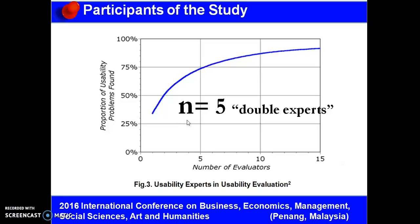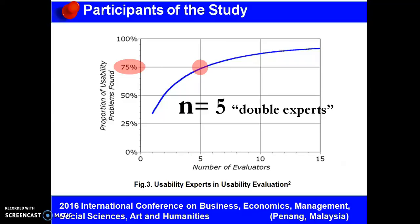The five participants of this study are called double experts. Double experts are those individuals who have multiple areas of expertise. They can effectively determine more usability problems since they are expert users who have a strong knowledge base about usability, competence on the use of computers or systems, and strong familiarity about the domain under study. As illustrated in Figure 3, it is reasonable to recommend the use of five evaluators in order to identify 75% of the usability problems, as beyond five evaluators creates decreasing efficiency since evaluators will find repeated usability problems in a looping manner.